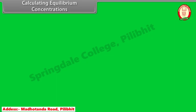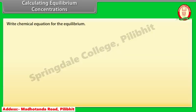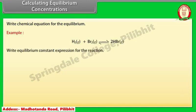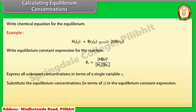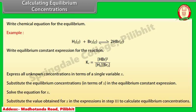Calculating equilibrium concentrations: write the chemical equation for the equilibrium; write the equilibrium constant expression for the reaction; express all unknown concentrations in terms of a single variable X; substitute the equilibrium concentrations in terms of X into the equilibrium constant expression; solve the equation for X; then substitute the value of X back into the expressions from step 3 to calculate equilibrium concentrations.